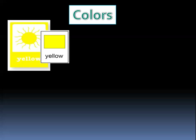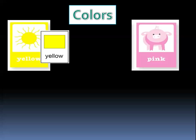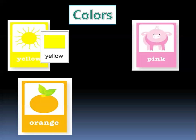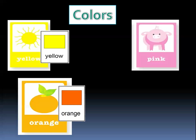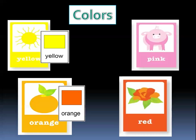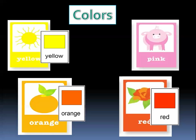What other colors do we have? We have the color pink — this is a pig and the pig is pink. And this is an orange, and the color of the orange is orange too. This is a flower — what color is this flower? This flower is red. So we have yellow, pink, orange, red.